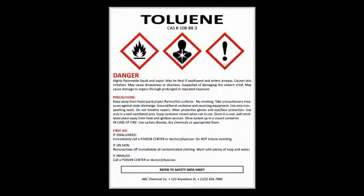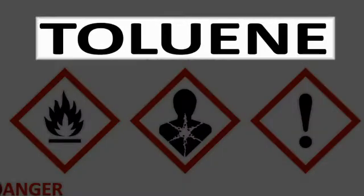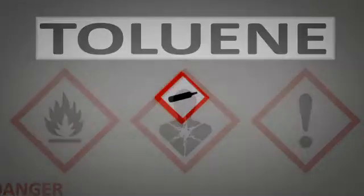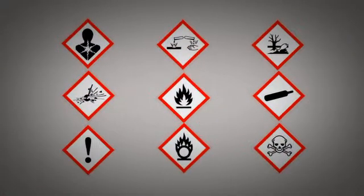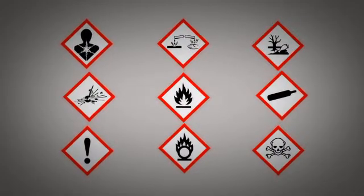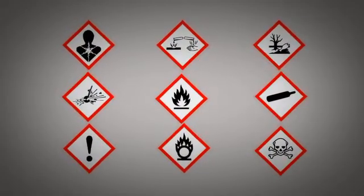Labels produced in accordance with the GHS contain several important elements. First, the product name or another identifier. Any hazardous ingredients or components are listed. Hazard symbols, or pictograms, are used to visually represent hazards presented by the material.